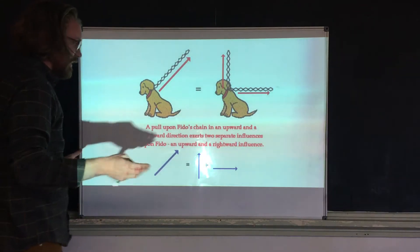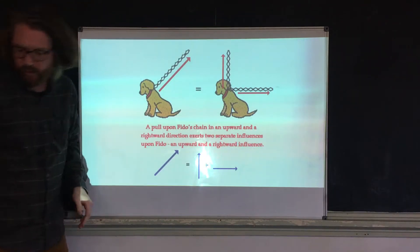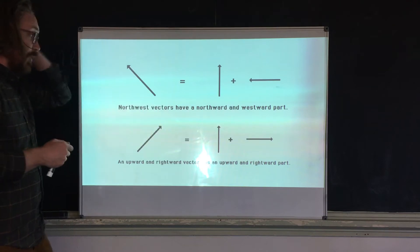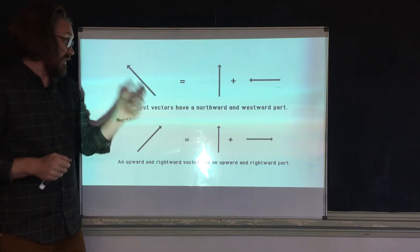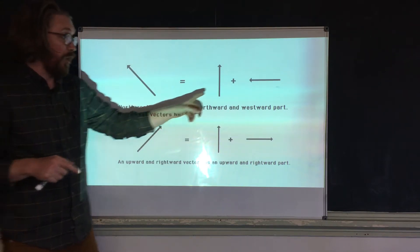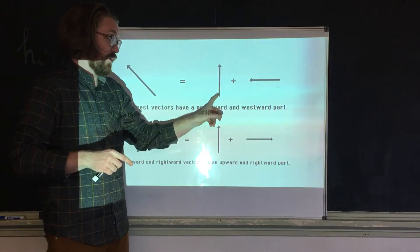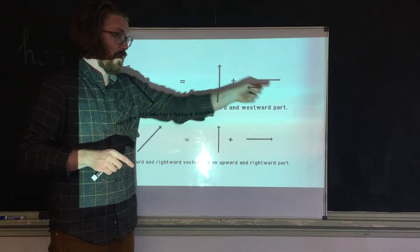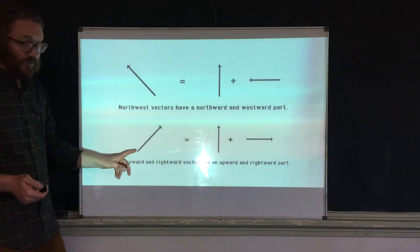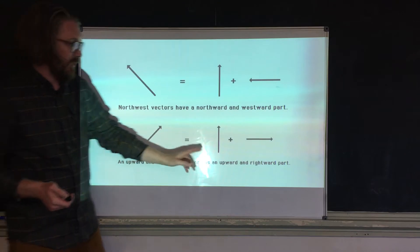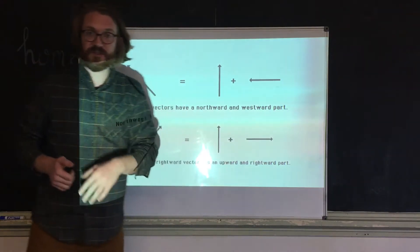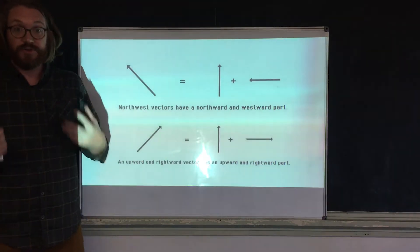To find these components we have to break the force down. For example, if you have a force going northwest, part of that force is going north and part of it is going west. Similarly, if you're going northeast, part of that force is going up and part of that force is going over to the right.